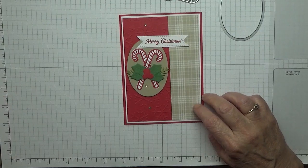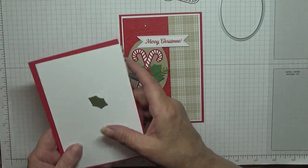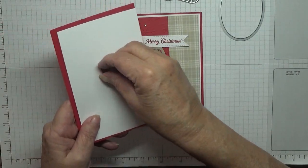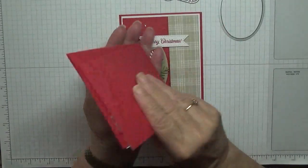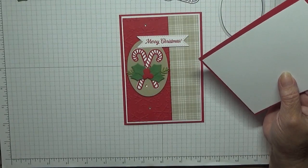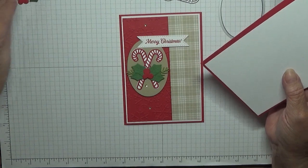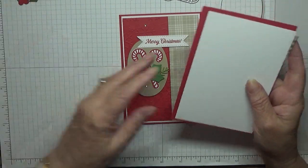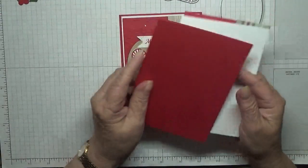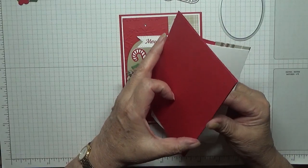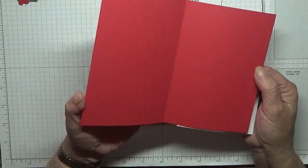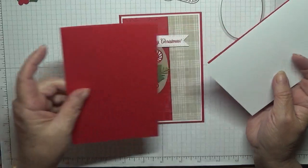For card stock, I have got a holly leaf. I've got a card base of eight and a quarter by five and seven eighths, scored at four and one eighths, folded in half and burnished.